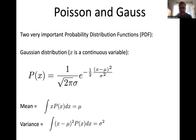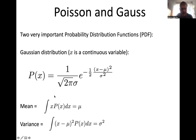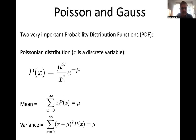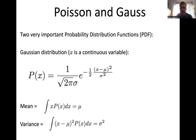The other important probability distribution function is the Gaussian distribution, where X is a continuous variable. It is written by a formula with two parameters: mu and sigma. It gives you the probability that X is between X and X+dx. Calculating the mean by integration gives mu — so mu is the mean of the distribution — and sigma squared is the variance.